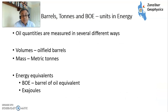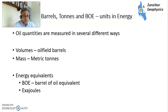Oil quantities tend to be measured in two different ways. Volumes in the Anglo-American world tend to be oil fuel barrels, while mass tends to be used in mainland Europe, the former Soviet Union, and Asia, where they talk about metric tons. There are also energy equivalents such as BOE, barrel of oil equivalent, tons of oil equivalent, and units such as exajoules and British thermal units.